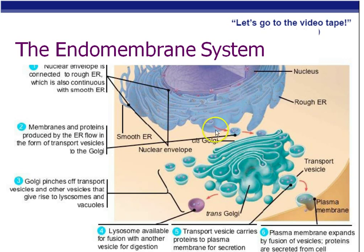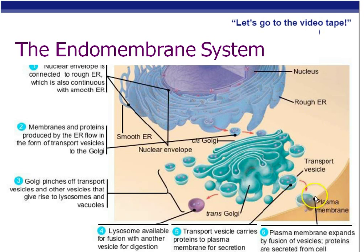The rough ER makes proteins using the ribosomes, and then the proteins are transferred via a little pinched-off vesicle to the cis, or closed side of the Golgi. Once in the Golgi, the protein will be modified and given a chemical barcode called a glycoprotein to tell it where to go, then sent out to the trans side. If it's a protein going to leave the cell, the vesicle will fuse with the cell membrane — they act like soap bubbles and can fuse together — and the protein enters the interstitial fluid and eventually the bloodstream. This is how insulin is made. Lysosomes are also made by this system.